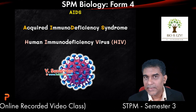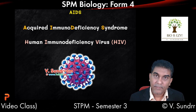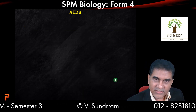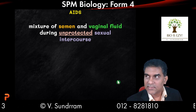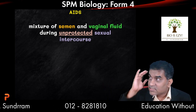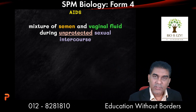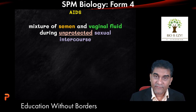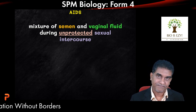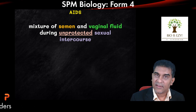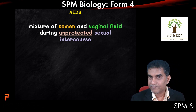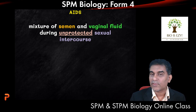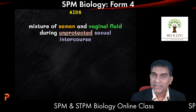How does HIV enter the body? The first and most well-known method of transmission is unprotected sexual intercourse. The male produces semen and the female produces vaginal fluid. If the male is already infected, the semen will have HIV. If the female is already infected, the vaginal fluid will have HIV. If they have unprotected sexual intercourse, the other person can become infected.